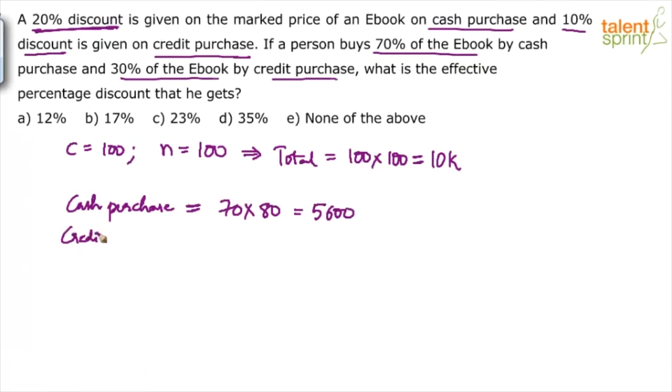What about his credit purchase? Remaining 30 books he bought on credit. And how much discount does he get on credit purchase? Only 10%. So instead of paying 100 rupees, he will pay 90 rupees. How much is 30 into 90? 2,700. So what is the total that he has spent? 5,600 plus 2,700. How much is that? 8,300.